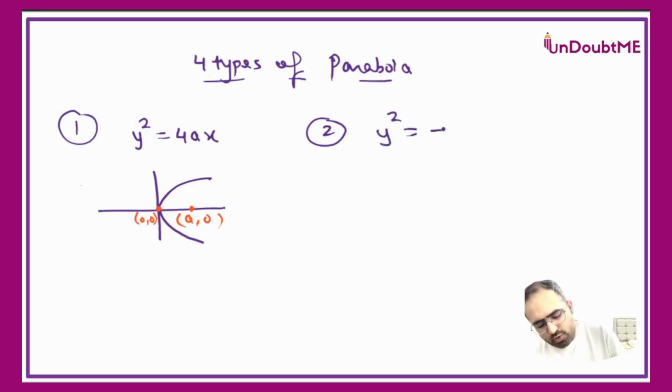y² = -4ax. It will go just opposite to this one, like this. The only difference between both of them is it's a reflection, plus the focus will be (-a, 0).